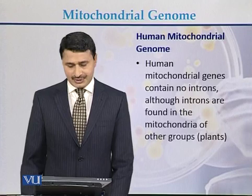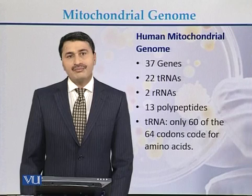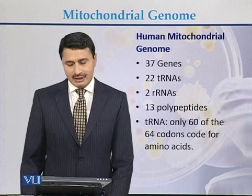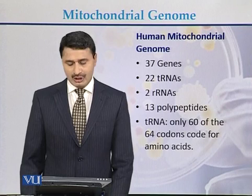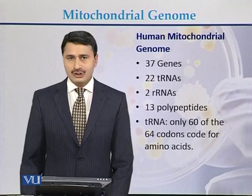In the human mitochondrial genome there are 37 genes in total. Out of these 37 genes, 22 are transfer RNA genes, 2 are ribosomal RNA genes, and 13 genes are polypeptide-producing genes.